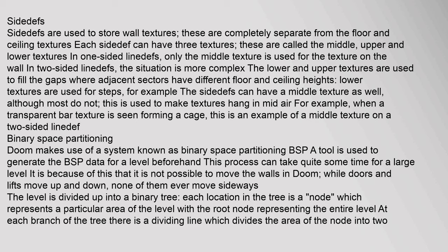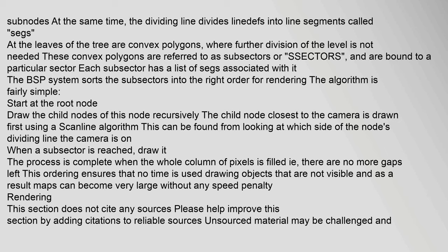Doom makes use of a system known as binary space partitioning, or BSP. A tool is used to generate the BSP data for a level beforehand; this process can take quite some time for a large level. It is because of this that it is not possible to move walls in Doom — while doors and lifts move up and down, none of them ever move sideways. The level is divided up into a binary tree; each location in the tree is a node representing a particular area of the level. The dividing line divides linedefs into line segments called segs. At the leaves of the tree are convex polygons called subsectors or ssectors, each bound to a particular sector with a list of segs associated with it.